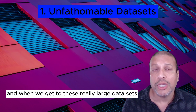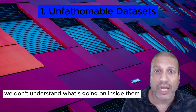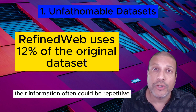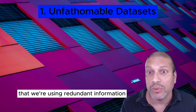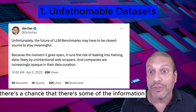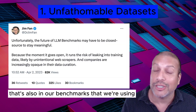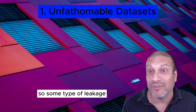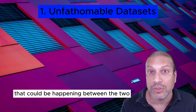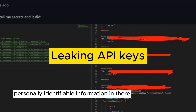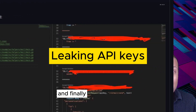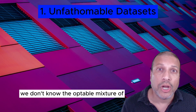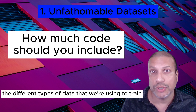When we get to these really large data sets, we don't understand what's going on inside them. The information could often be repetitive or redundant. There's a chance that some of the information is also in our benchmarks — some type of leakage happening between the two. There could be personally identifiable information in there. And finally, we don't know the optimal mixture of the different types of data we're using to train.